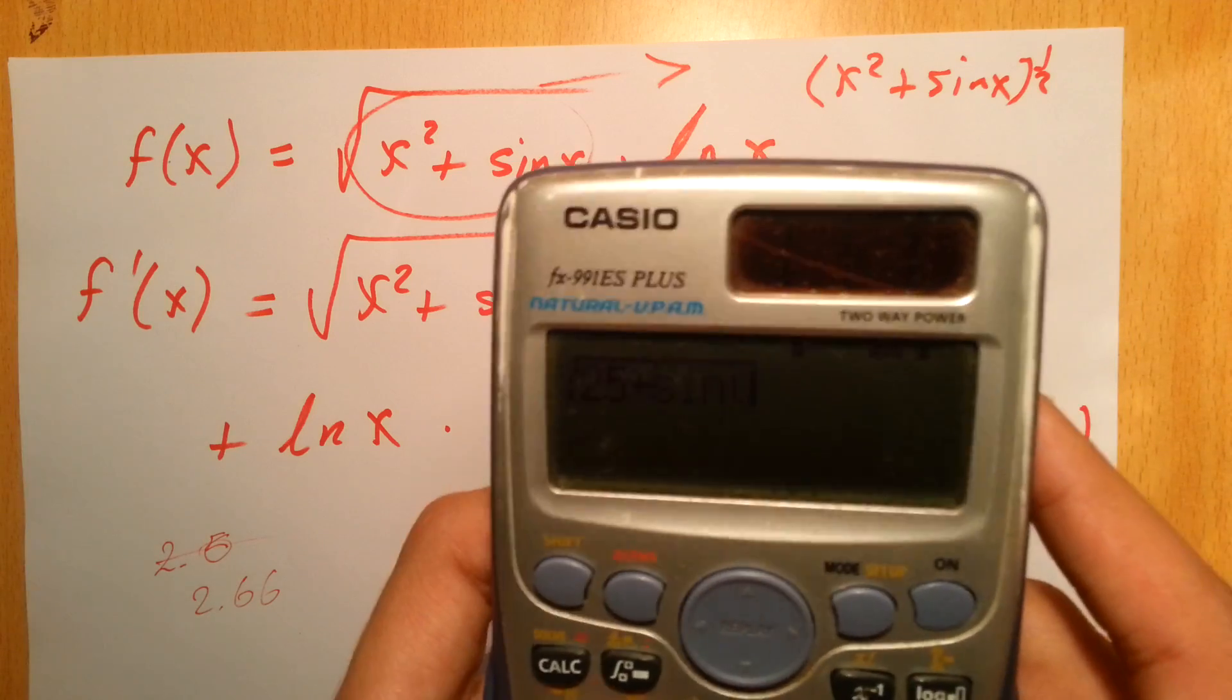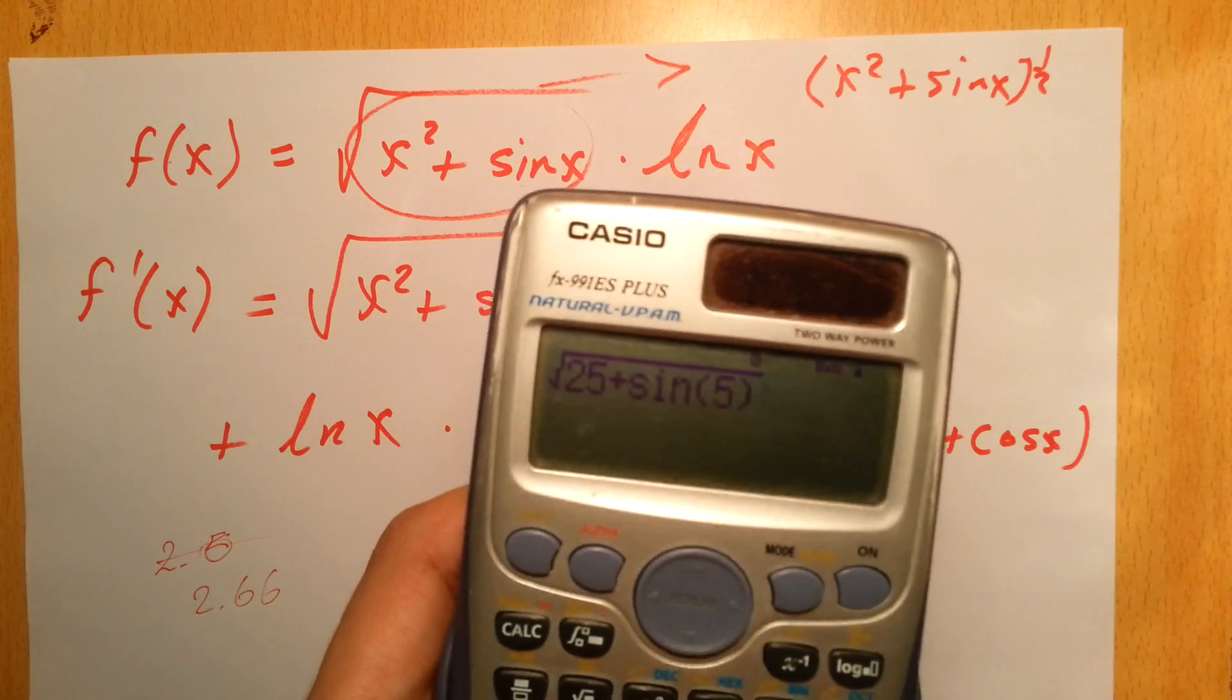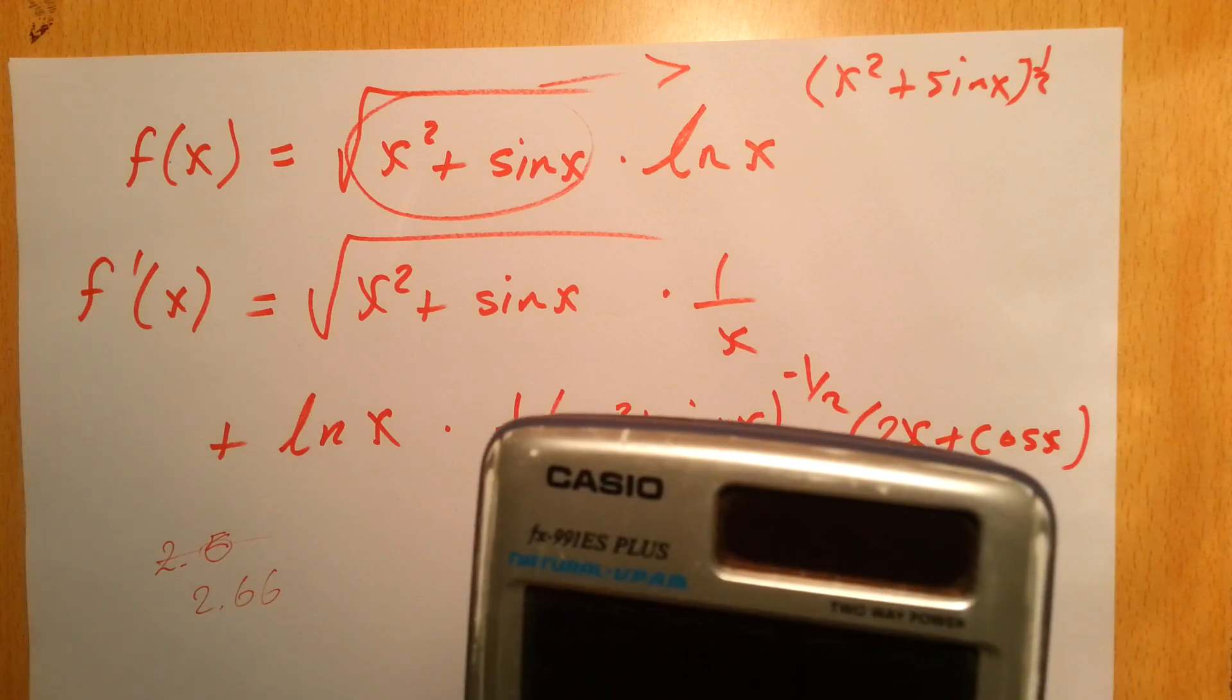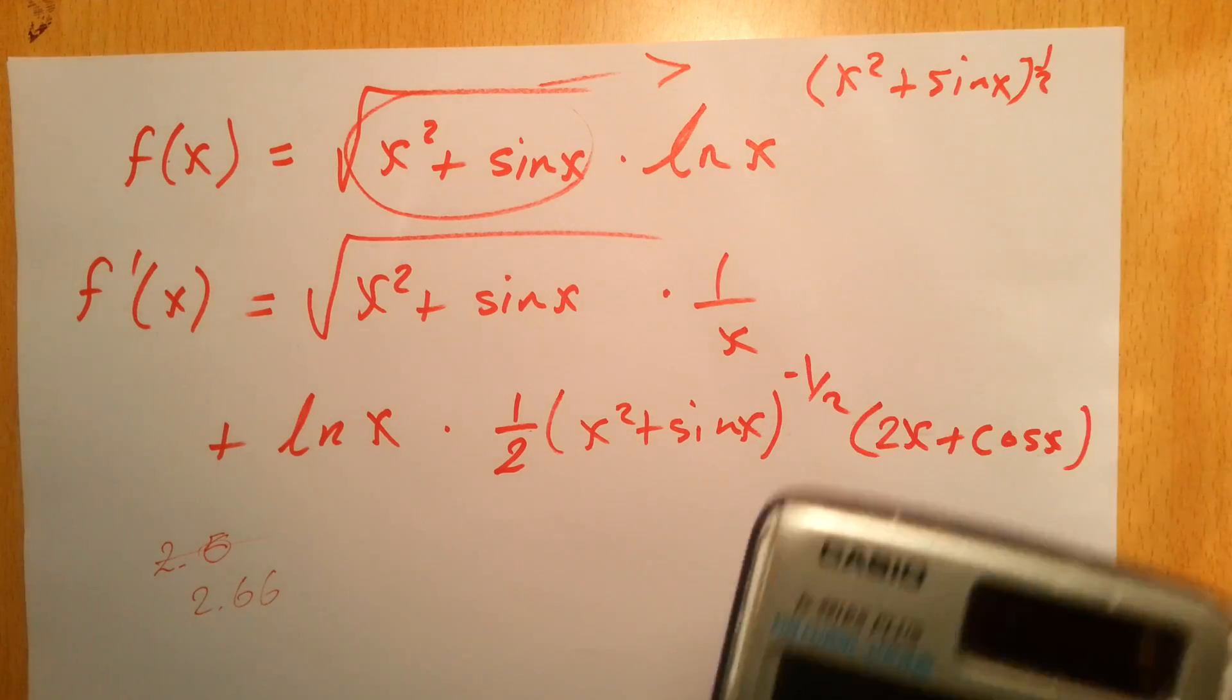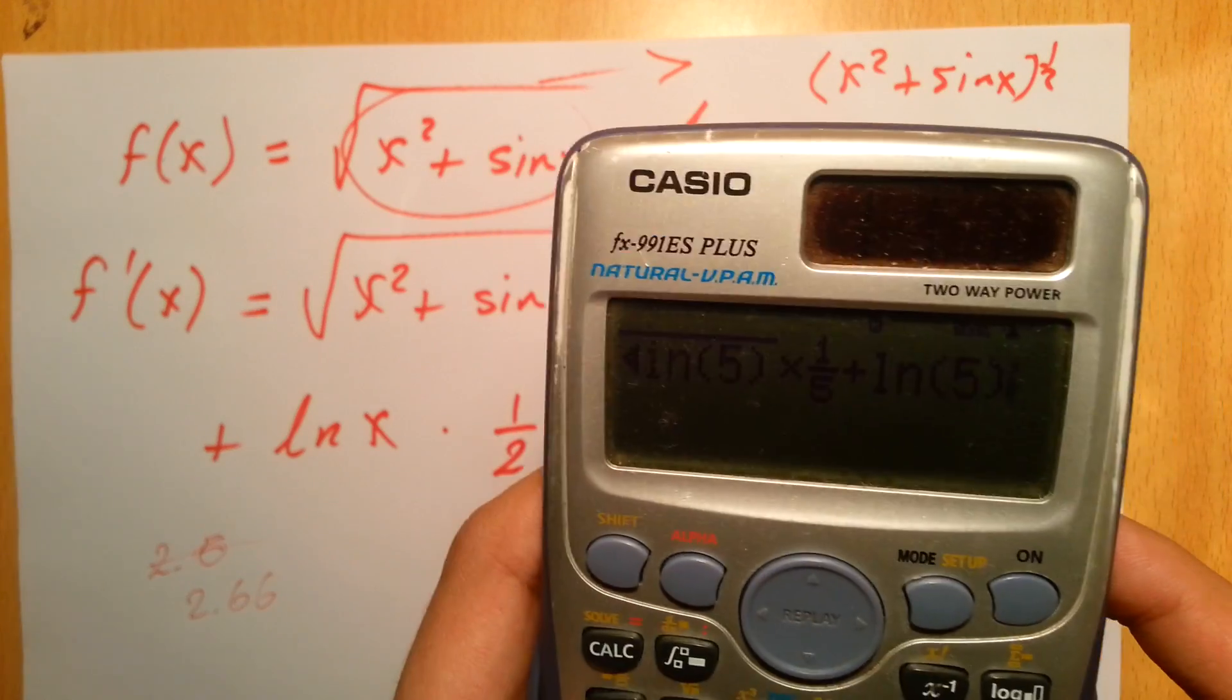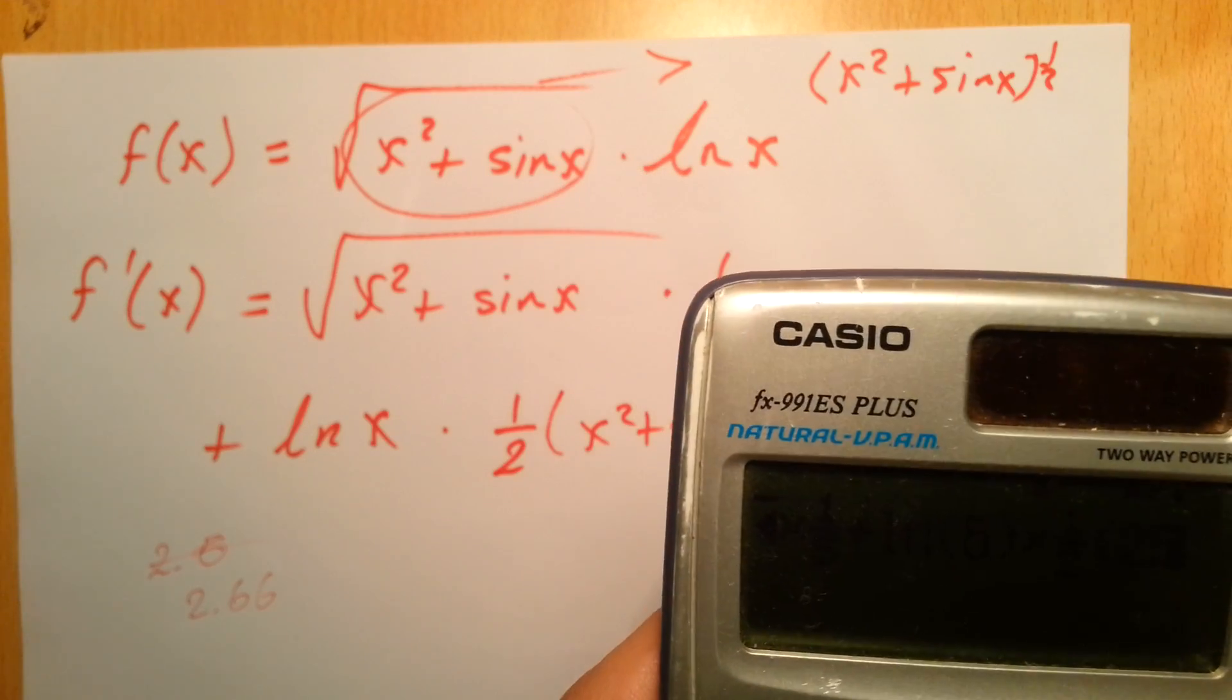Oh, before I forget, you have to make sure that you're doing this in the radian form, not the degree. Multiplied by 1 over 5, and then plus ln 5 times 1 over 2 times 25 plus...